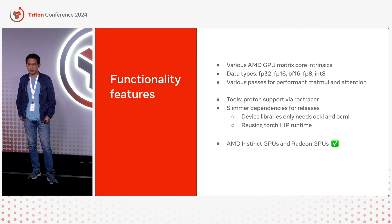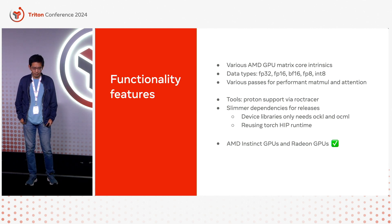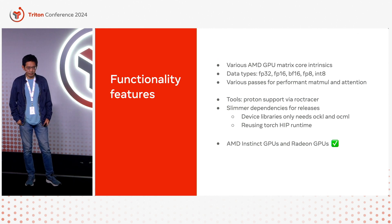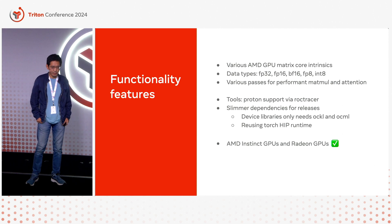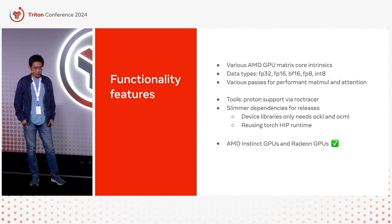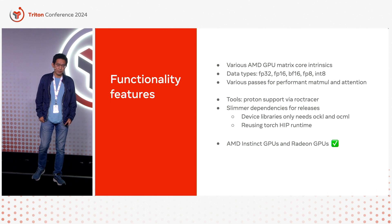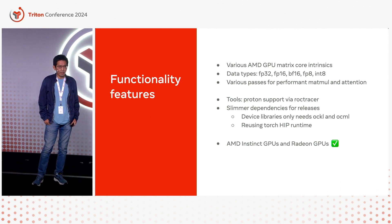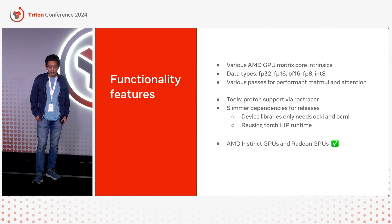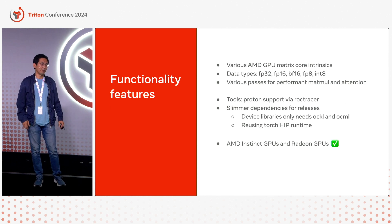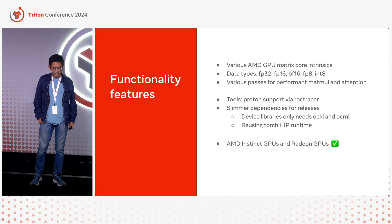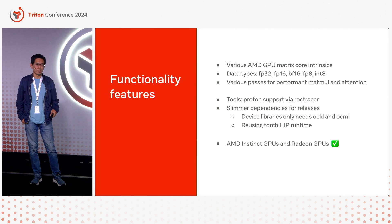There are also compiler passes you would expect for performant MATMUL and attention code generation. Beyond just the core compiler functionality, we are also investing in other parts to make Triton easy and good for developers, including profiling support via ROCTracer, which Karen talked about in the morning. We trimmed down the dependency story for better release stories — library-wise on the device side, we only need ROCm and ROCML, and we are reusing the runtime library from HIP and PyTorch. We have good support for AMD Instinct GPUs and Radeon GPUs.